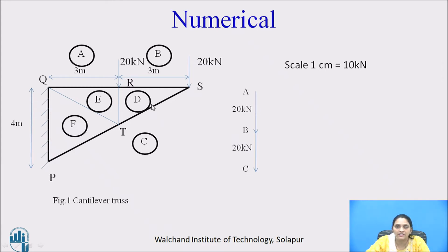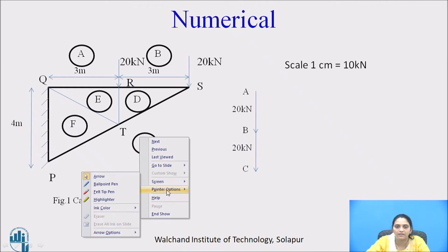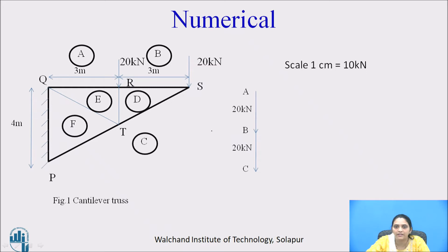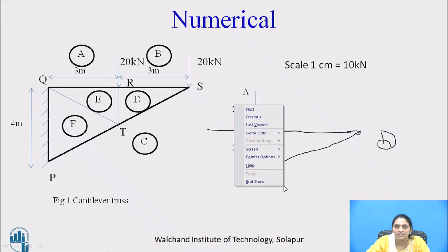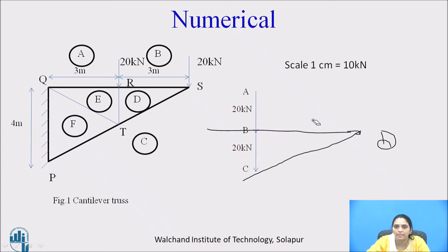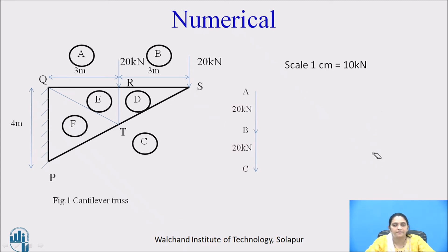Now we will determine space D. There is a force between space B and space D which is horizontal, and a force between space C and space D which is in member ST. We draw a parallel line to member ST from space C, and a parallel line to member RS from space B. The intersection point gives space D.